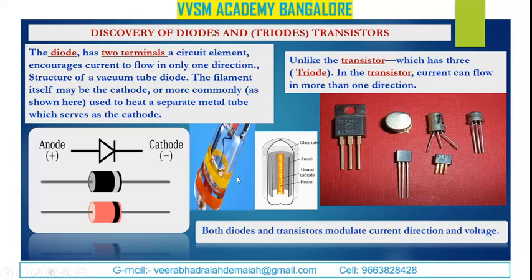Unlike the transistor, which has three terminals — that's why it's called a triode — in the transistor, current can flow in more than one direction.